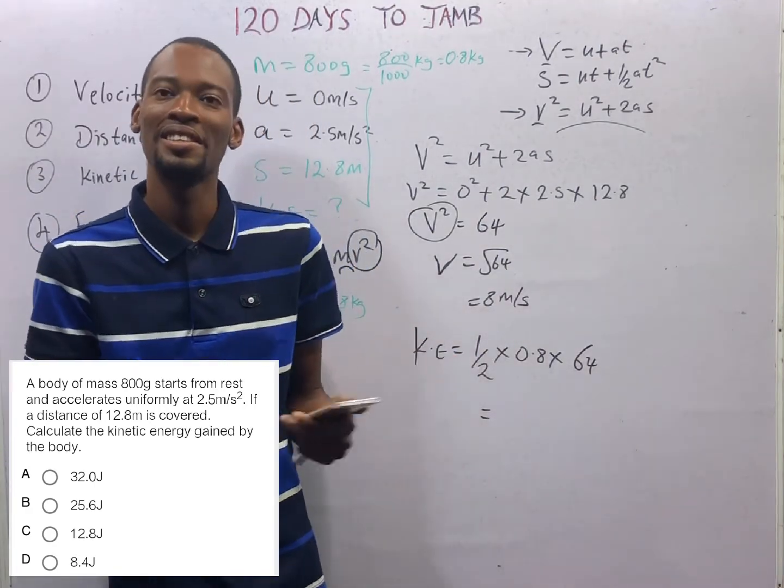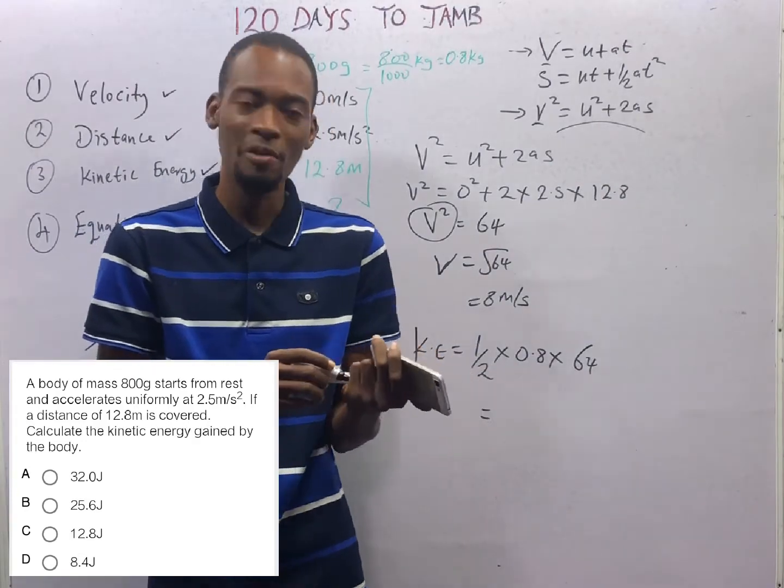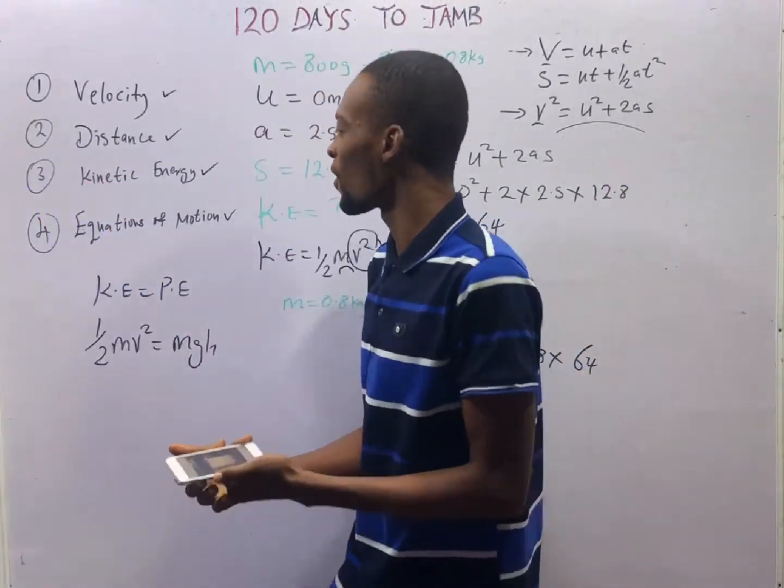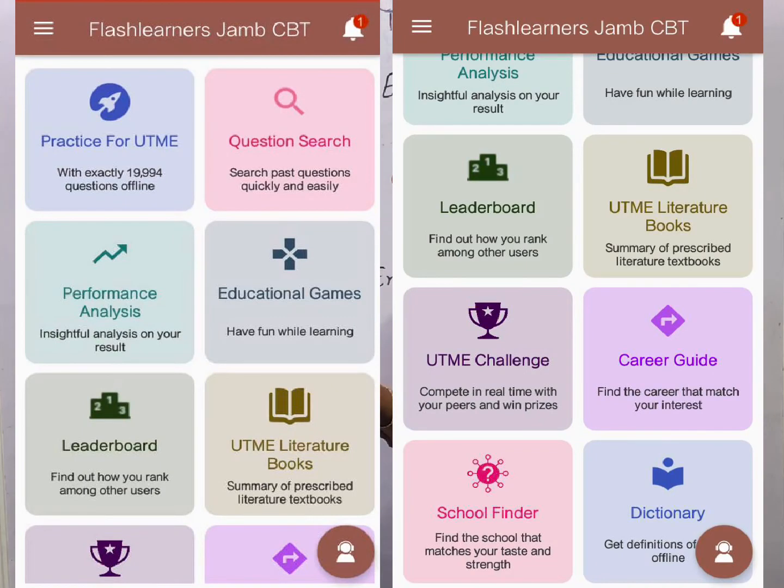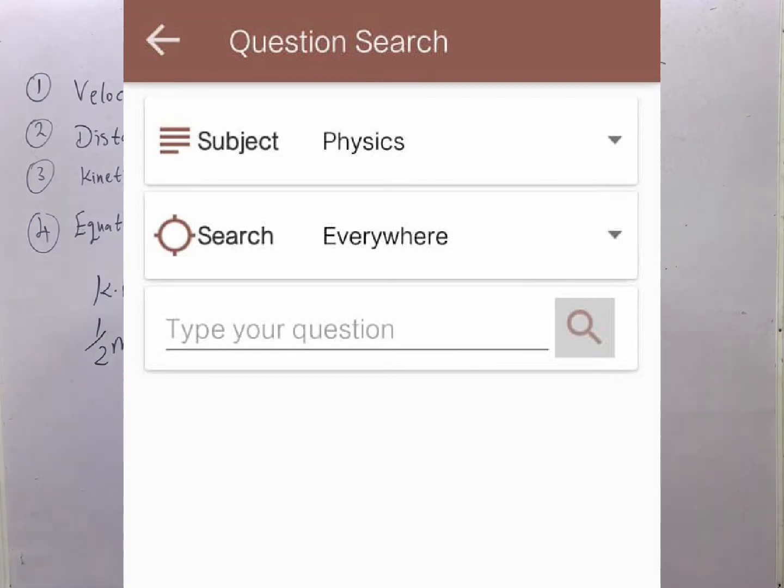So that is it for this question. Time for homework. Open your Flash Learners JAMB app. Click on question search. Tag kinetic energy. Answer question number 4 and see if you can answer any of the other questions.